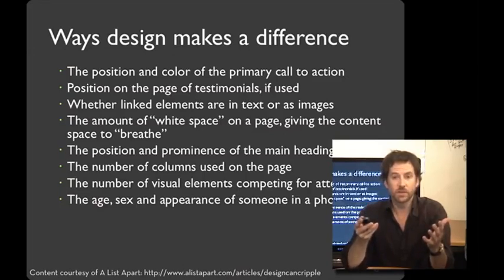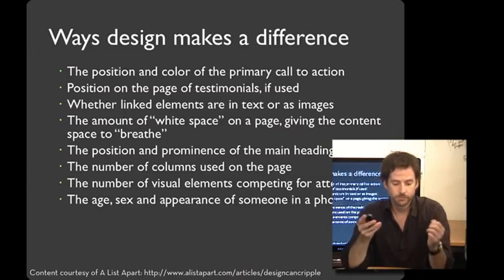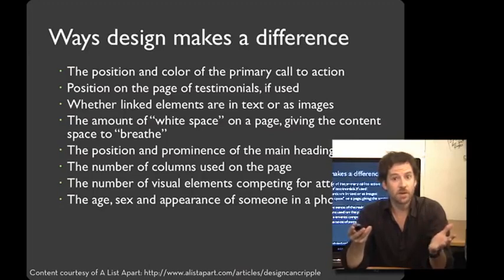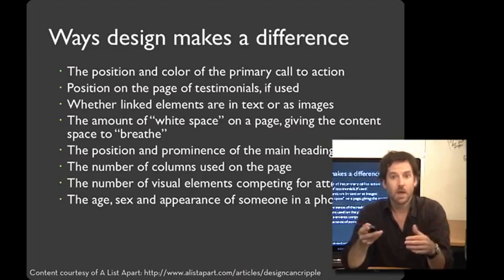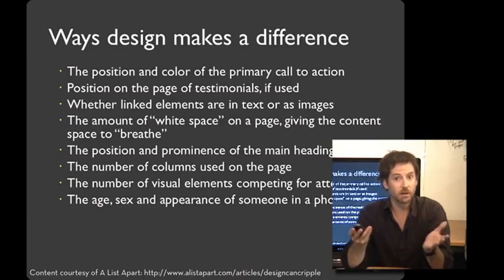As A List Apart writes, these can include things like the position and color of the primary call to action — what are you conveying to users that they should do on this page? Where are testimonials used, and how are links and images conveyed? How much white space does a page have? Where is the main heading and how prominent is it? How many columns does a page use? What visual elements are competing for attention, and what's going on in the photos? In our visual design lectures, we talked about strategies for using these tools more effectively. In this lecture, we'll look at techniques for measuring whether the outcome is the one you want.